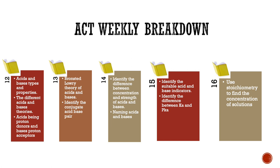On November 12th we will be going over acid and base types and properties. We will identify the different acid and base theories, going over the Arrhenius theory and the Bronsted-Lowry theory and their key differences. We will cover acids as proton donors and bases as proton acceptors for the Bronsted-Lowry theory, and acids as proton donors and bases as hydroxide ion donors for the Arrhenius theory.